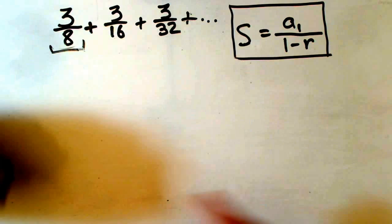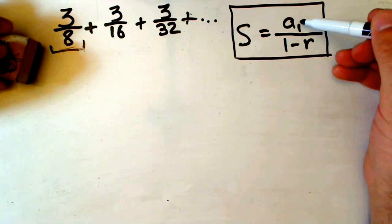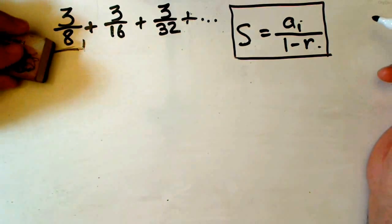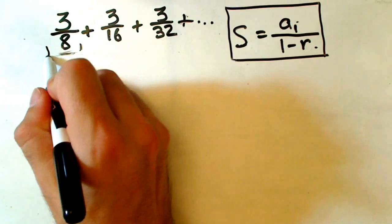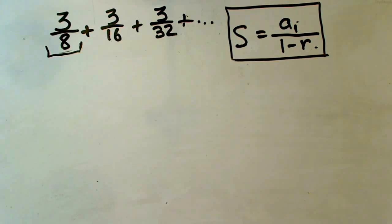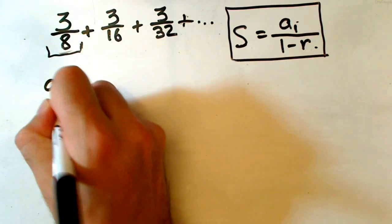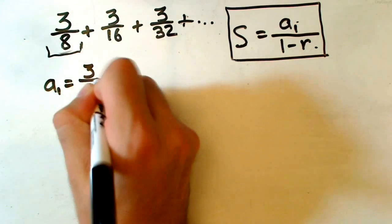As we can see, we have to find our first term and common ratio. Our first term is right in front of us: 3 over 8.